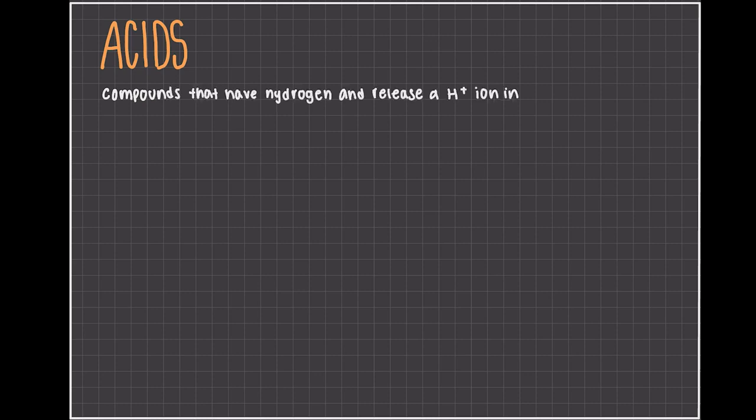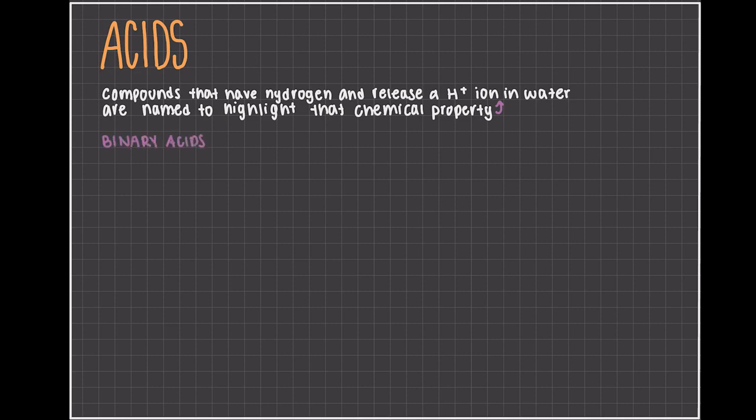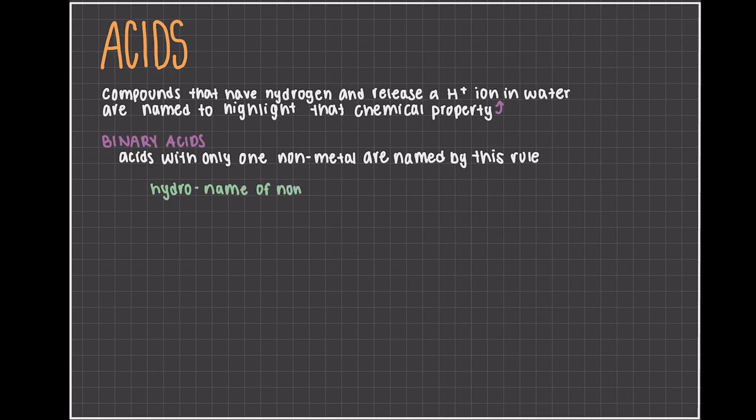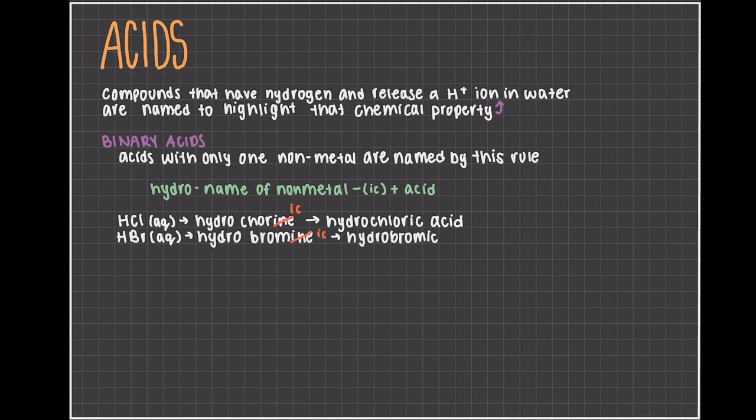Compounds that have a hydrogen and release an H+ ion in water are named to highlight that chemical property, which makes it an acid. Binary acids only have one non-metal and a hydrogen and are named with hydro as the prefix and then the name of the non-metal with an 'ic' suffix and the word acid. I want you guys to note that this is only in aqueous conditions where the hydronium ion is going to be released. If this was a gas or a solid, it would stay the same way as we've been naming previously. So, let's look at HCl. We have hydrochlorine, which goes to chloric, and then we add the word acid to make hydrochloric acid. For HBr, we start with hydrobromine, which goes to bromic, so we have hydrobromic acid. Just a reminder that this is only in the aqueous form.